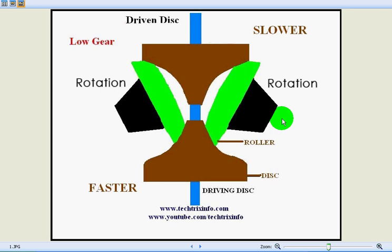As this is an automatic transmission system, we don't employ gears. Instead, we have discs - the driving disc and the driven disc - and we have two rollers over here. Let's see how it is working.